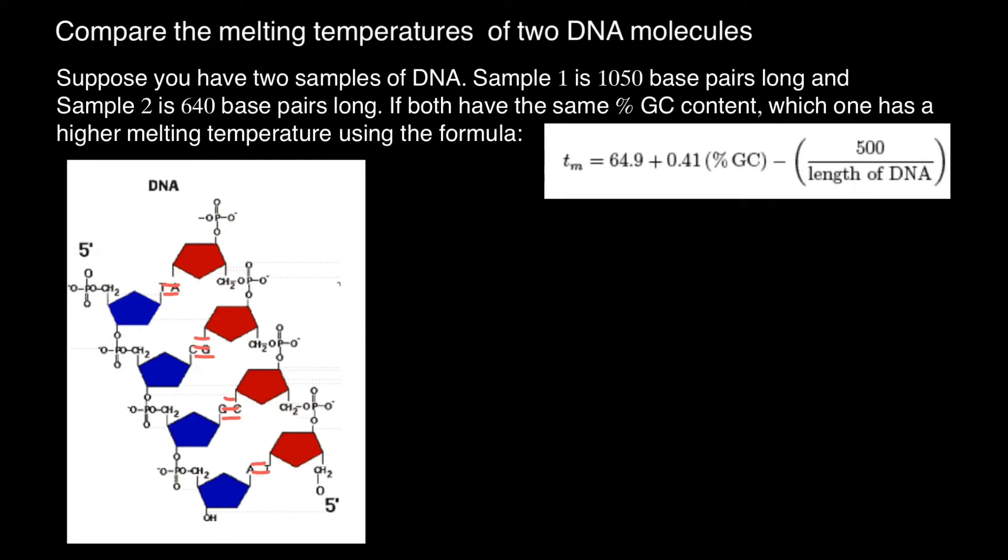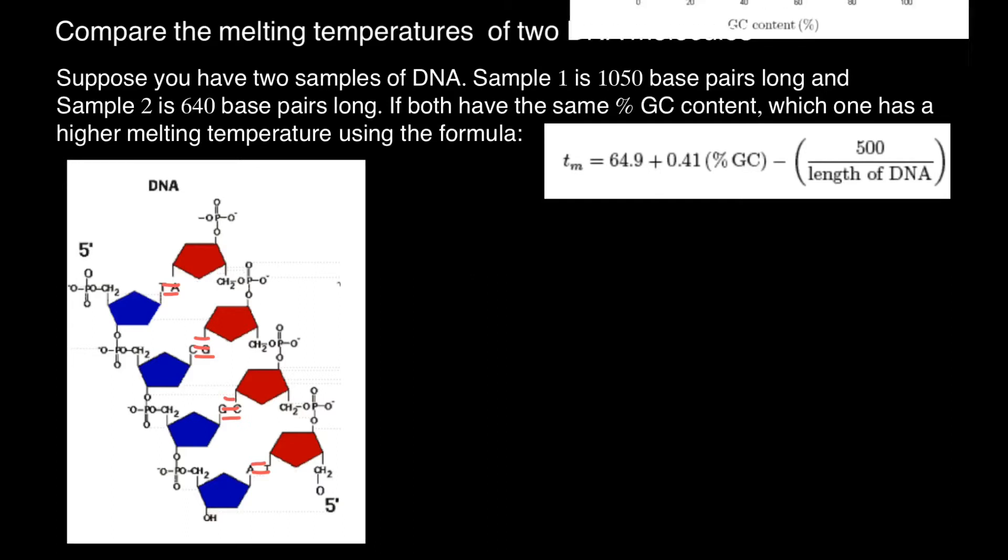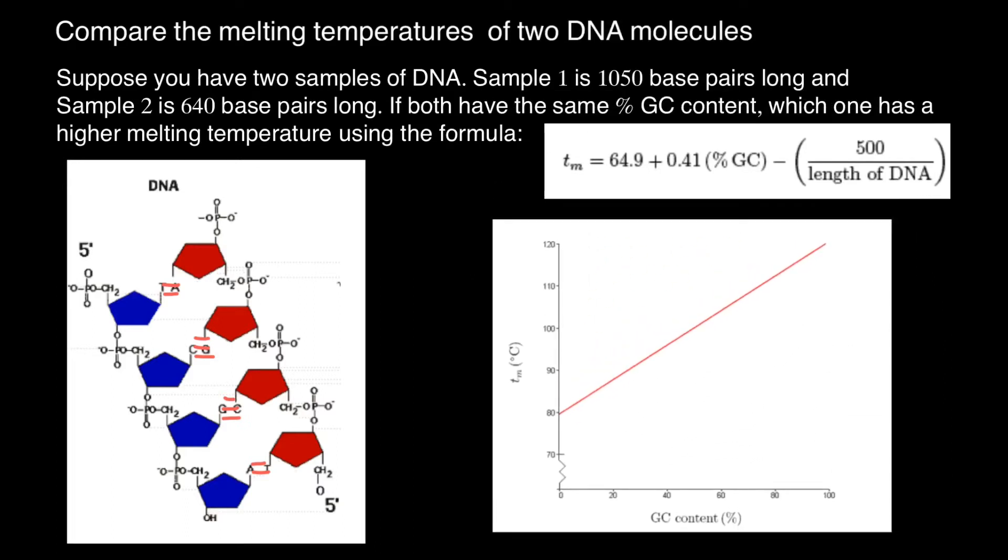So this is very easy to understand. And also take a look at this picture. Here we have a relationship between GC content, guanine-cytosine base pairs, which is represented by percentage of the total base pairs in the double-stranded DNA. And here is a temperature on this axis.